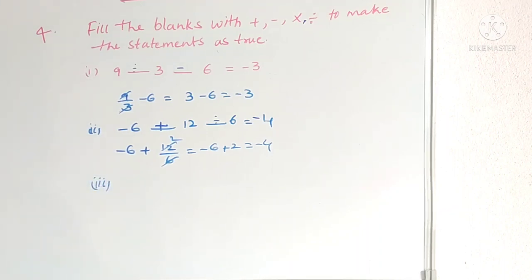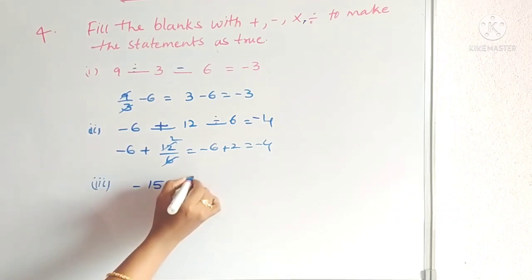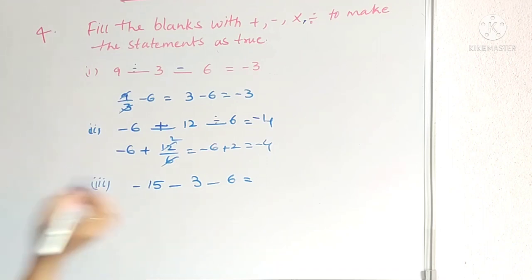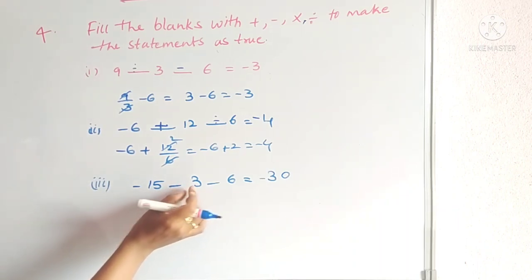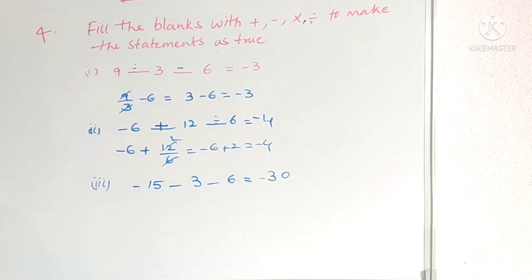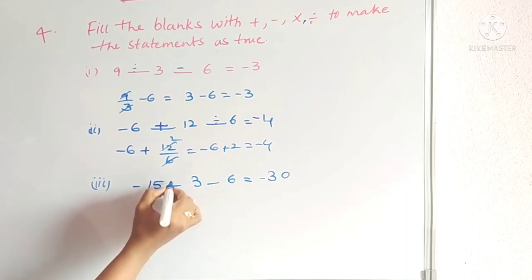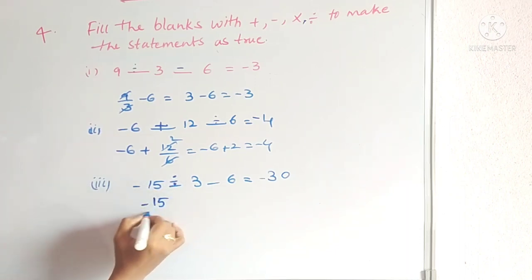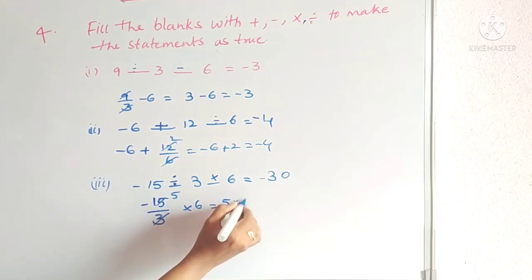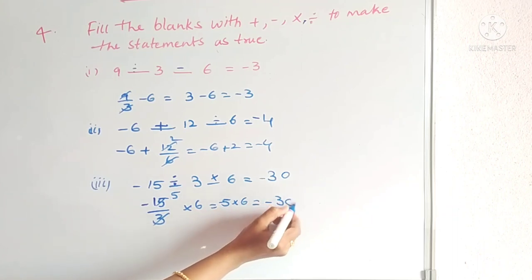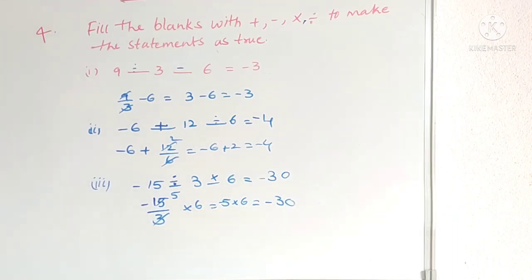Last one: −15 __ 3 __ 6 = −30. We need to reach −30. 5 × 6 = 30. How to get 5 from 15 and 3? 15 ÷ 3 = 5. Then −5 × 6 = −30. Wait — −15 ÷ 3 = −5, then −5 × 6 = −30. So symbols are ÷ and ×. Answer: −15 ÷ 3 × 6 = −30.